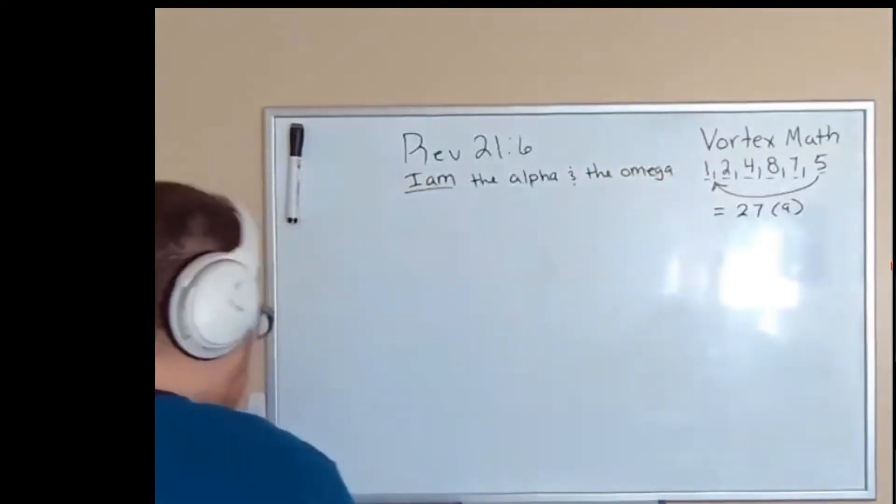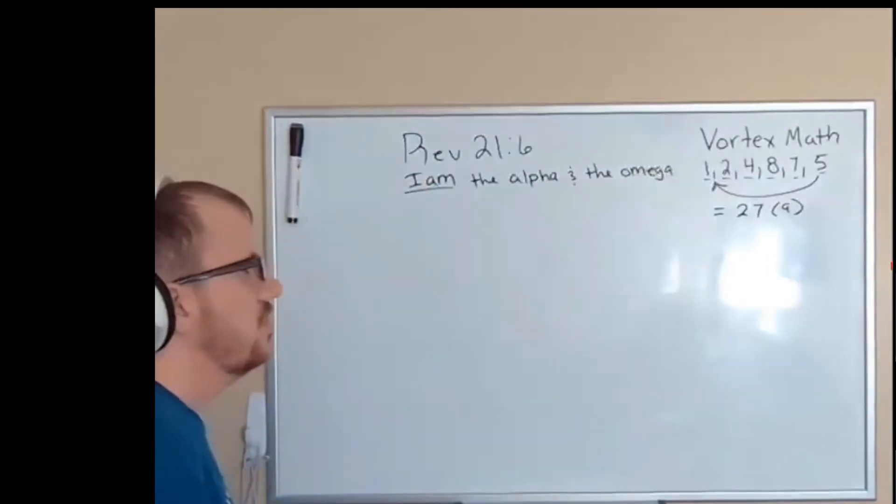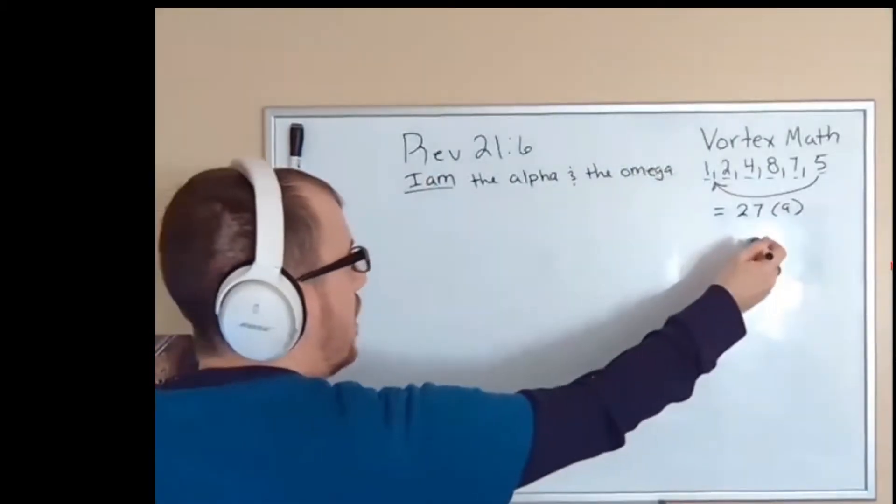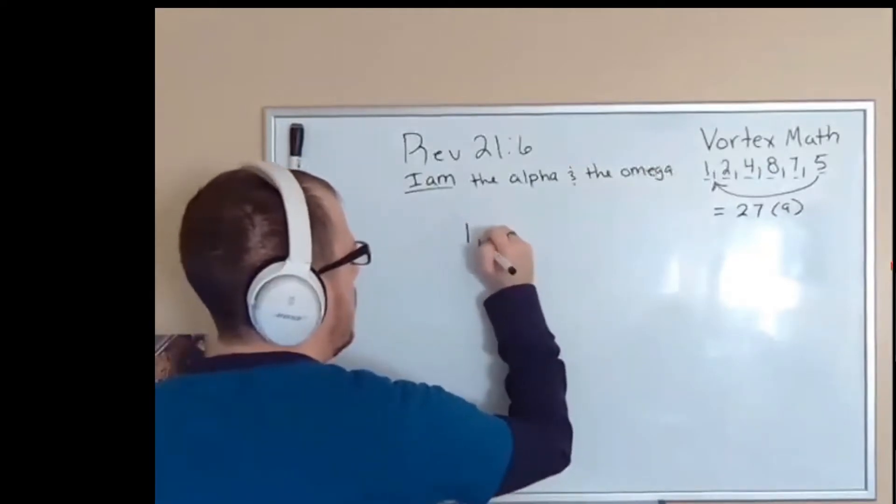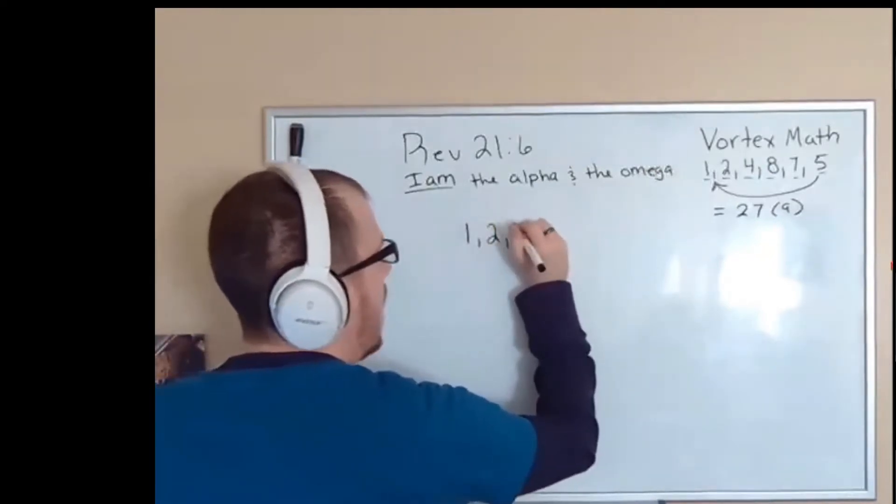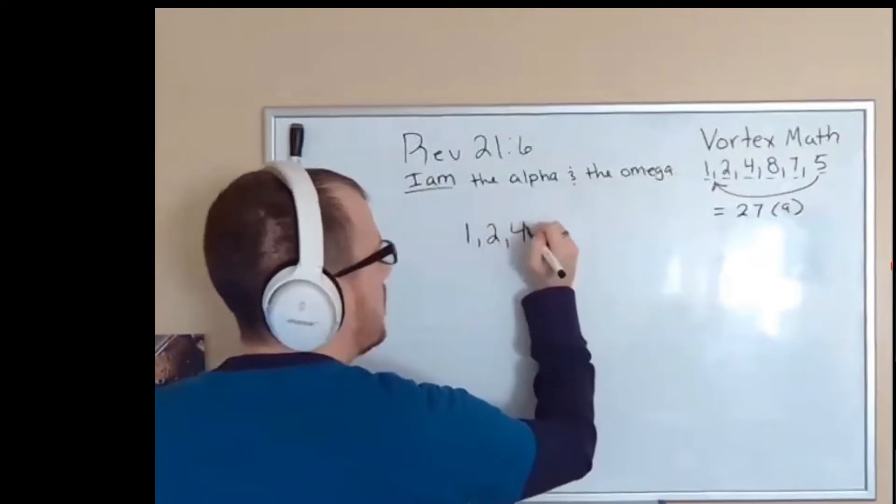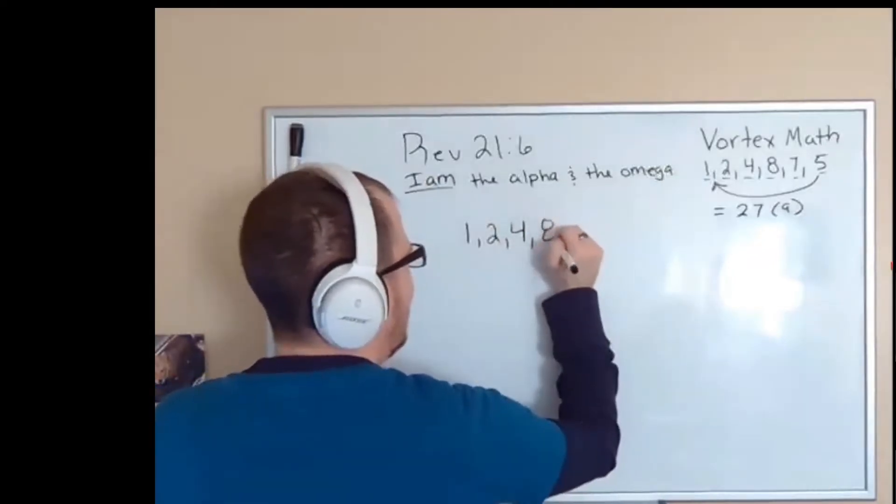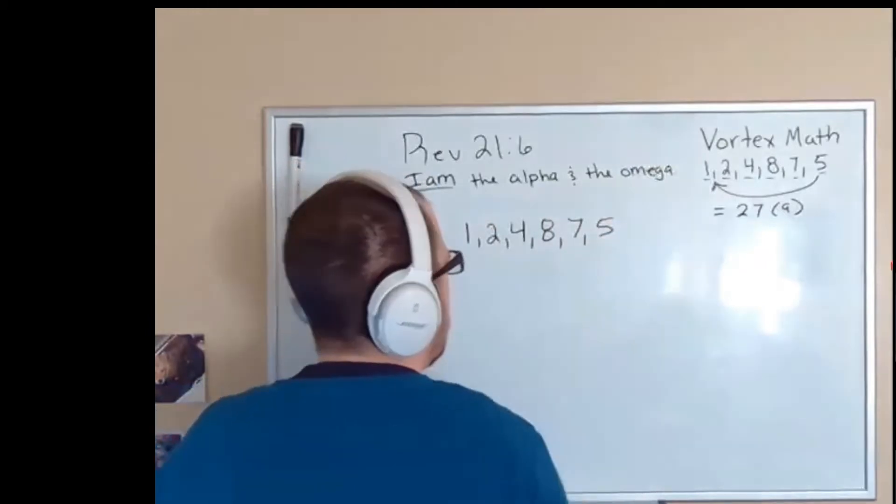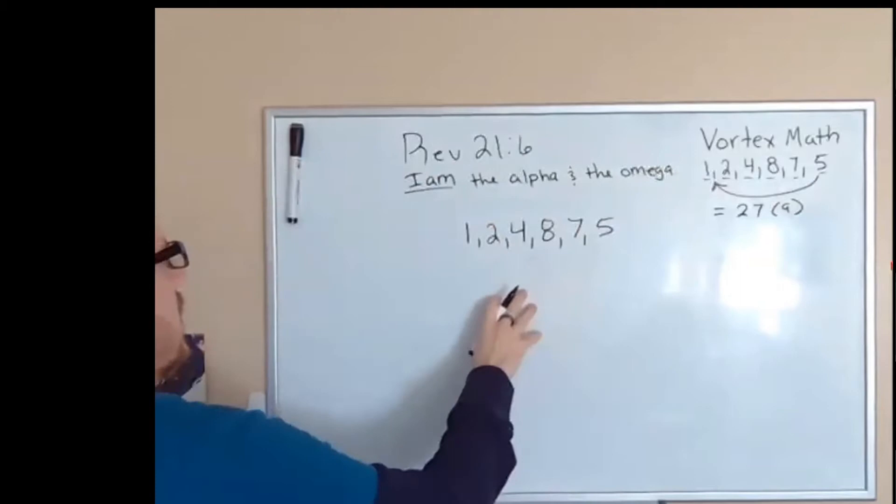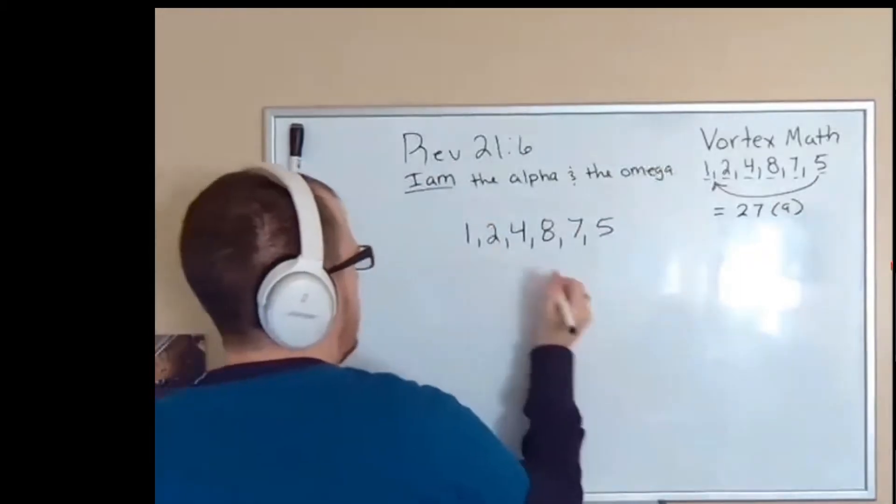So the reason I'm writing this is because I want you to focus on this as I show you. Inside of vortex math, which is already a hidden pattern, is another hidden pattern. It's basically a rabbit hole that just keeps going. I'm going to show you it here in a second.